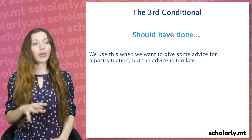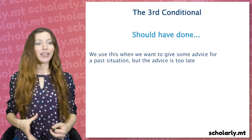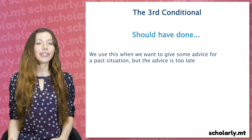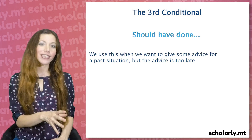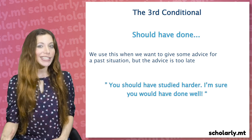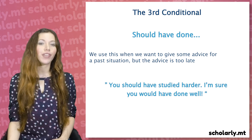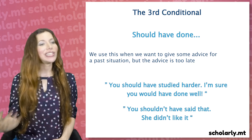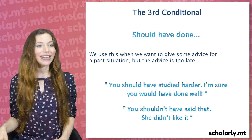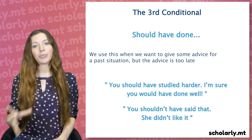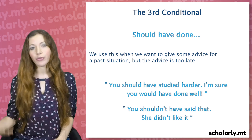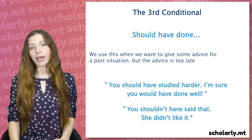We use 'should have done' when we want to give advice for a past situation, but the advice is too late. For example: 'You should have studied harder — I'm sure you would have done well.' 'You shouldn't have said that — she didn't like it.' So 'should have done' expresses some sort of criticism, as in: 'You should have asked me before you borrowed my mobile phone.'